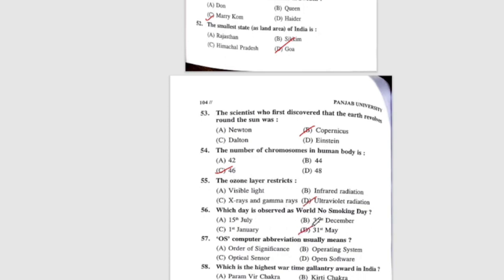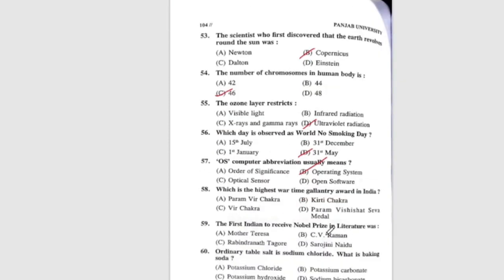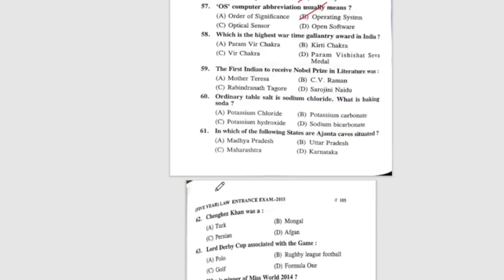Question 57: OS computer abbreviation usually means — the correct answer is B, Operating System. Question 58: Which is the highest wartime gallantry award in India? The correct answer is option A, Param Vir Chakra.